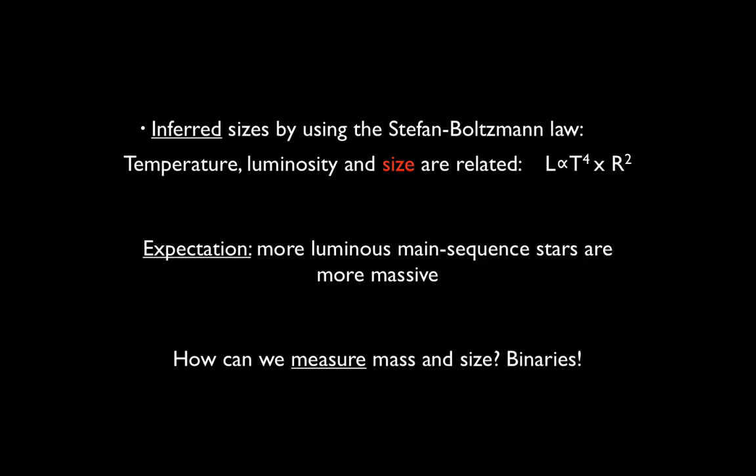We used luminosity and temperature to deduce the sizes of stars, to infer those sizes based on the Stefan-Boltzmann law. But we haven't talked about how we might actually measure stellar sizes. We haven't done so directly yet. We also have a certain expectation that more luminous main-sequence stars are more massive. We think this is the case because their higher masses means that their temperatures and densities in the cores are higher, which leads to more nuclear fusion reactions, which leads to higher luminosity. And we've talked about this in previous classes, but we haven't actually talked about how we might measure the masses of stars.